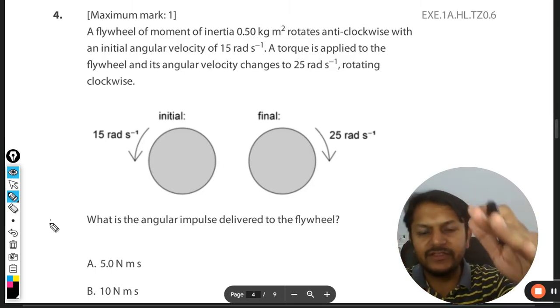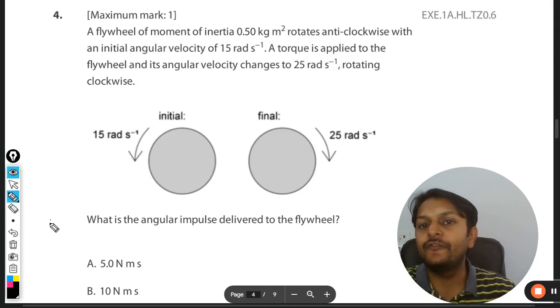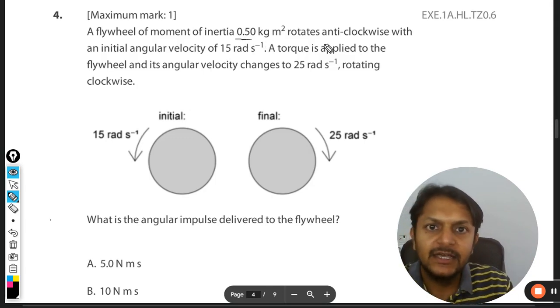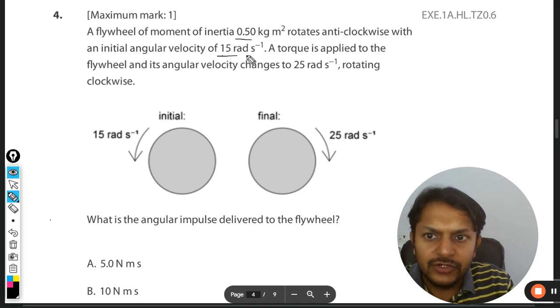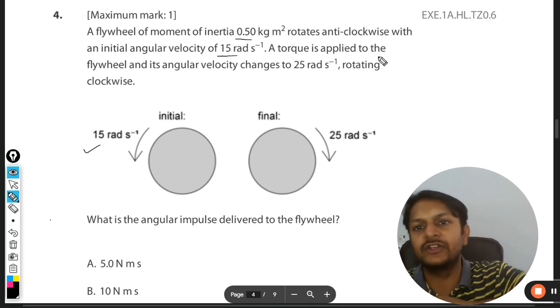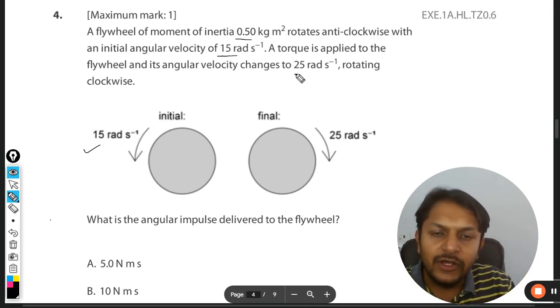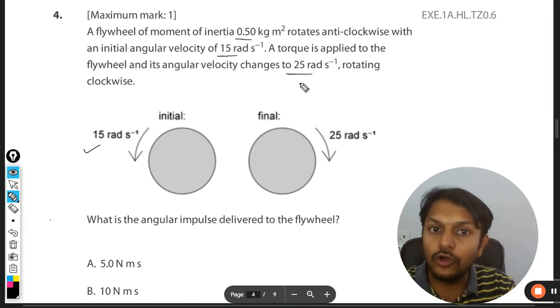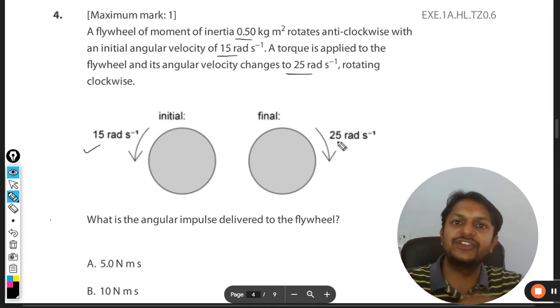Okay dear students, let's see what is there in this question. A flywheel of moment of inertia 0.50 kg m² rotates anti-clockwise with an initial angular velocity of 15 rad s⁻¹. A torque is applied to the wheel—somebody is trying to stop it or move it in the other way—and its angular velocity changes to 25 rad s⁻¹ clockwise. So even the direction is changed and it is now moving in the other direction.